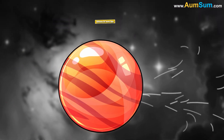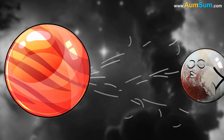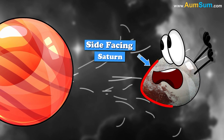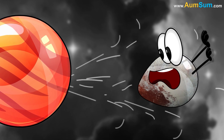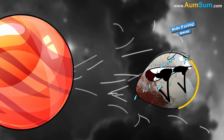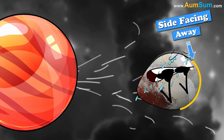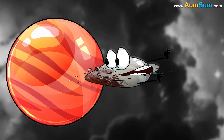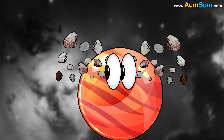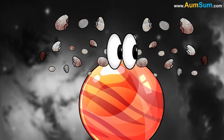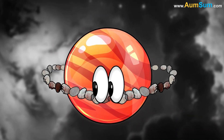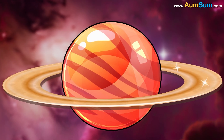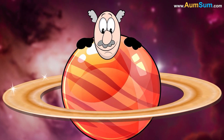Billions of years ago, a celestial body may have got too close to Saturn. Hence, the side facing Saturn was pulled more strongly as compared to the side facing away. So, this inconsistent gravitational pull may have ripped apart the celestial body into pieces. Finally, these pieces might have started revolving around Saturn, thus forming its beautiful rings.